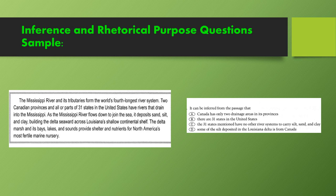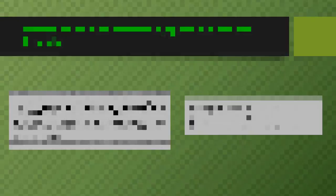Option D: If the Mississippi extends to Canada and flows down to the sea carrying sand, silt, and clay, probably some of the silt the river is carrying comes from Canada. So letter D is our final answer. Thank you.